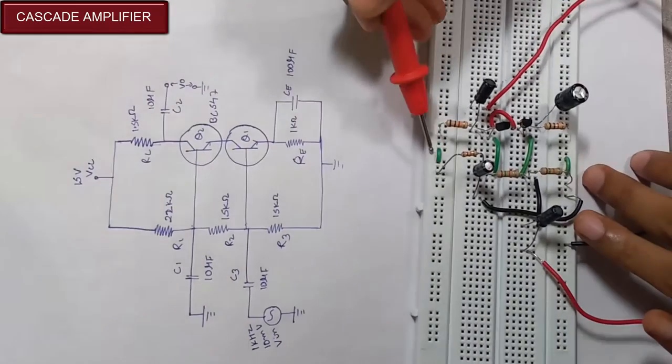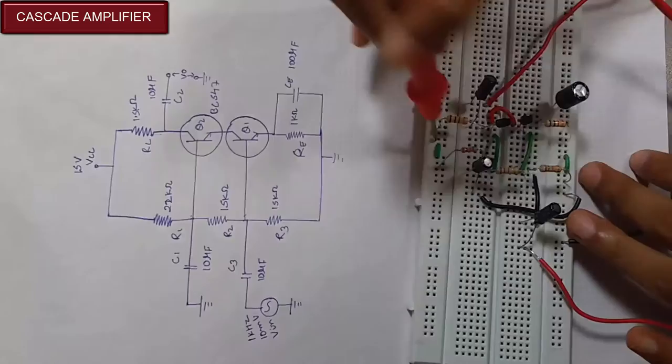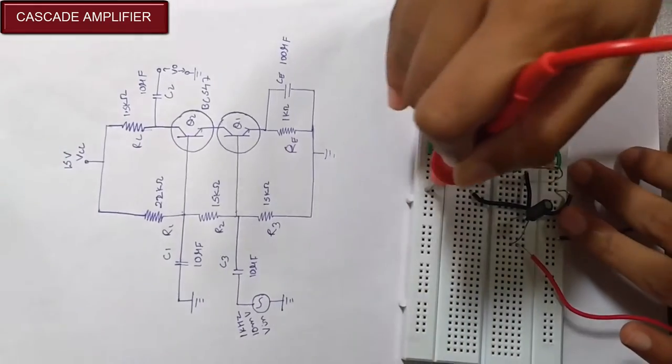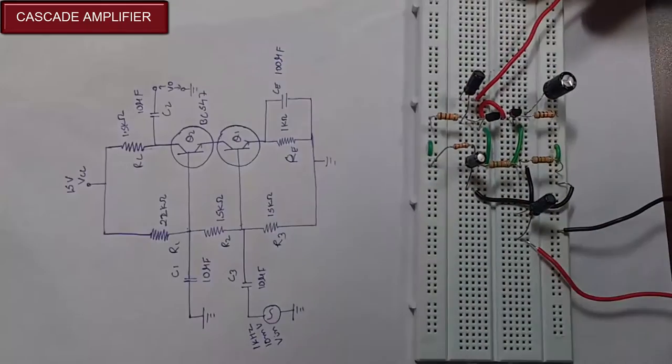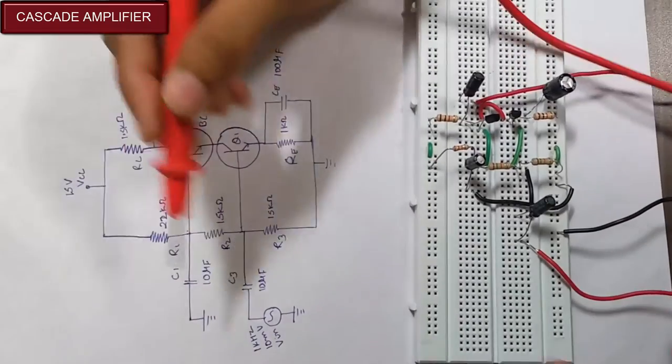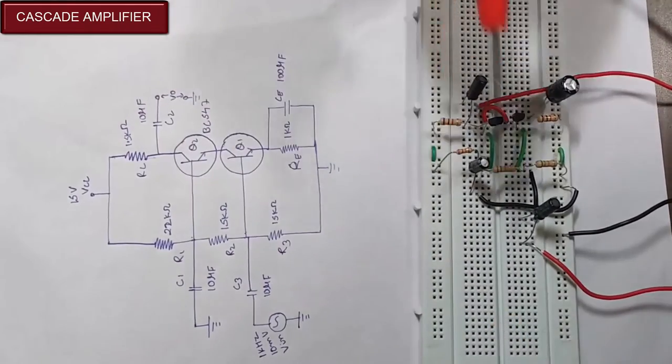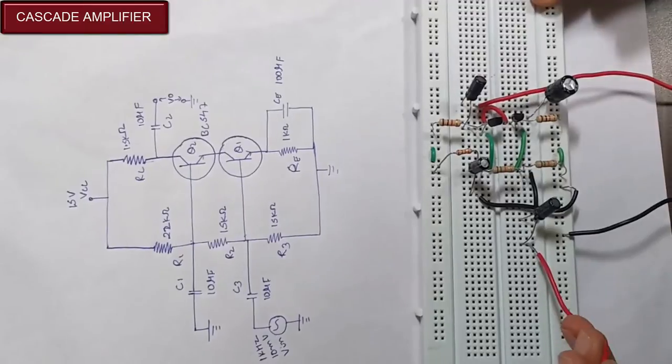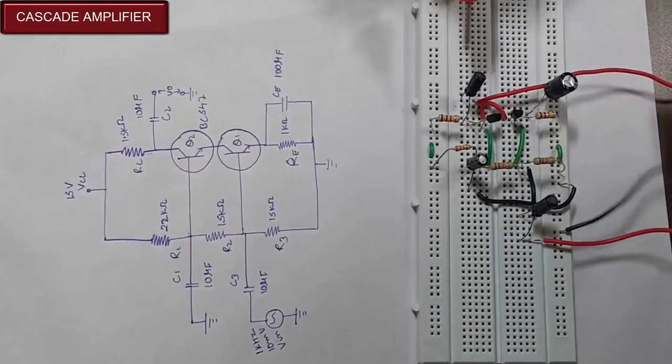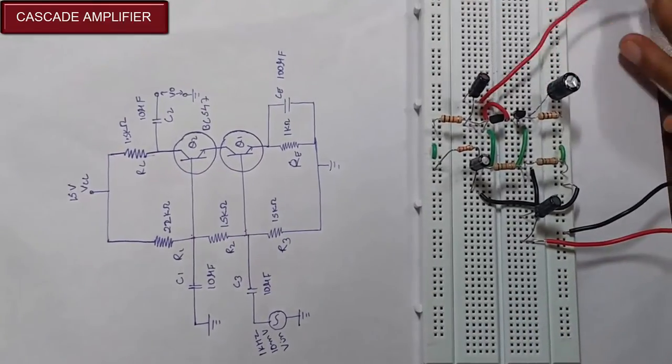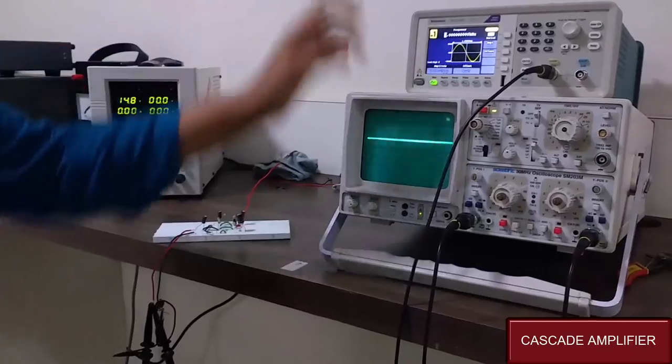R1 and RC are connected to VCC, and this line acts as VCC where we will give the voltage supply. Input is at C3—as you can see in the circuit diagram, this wire is used to give the input. This is C2 from where we are going to get our output.